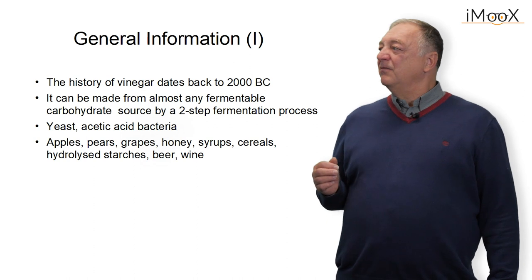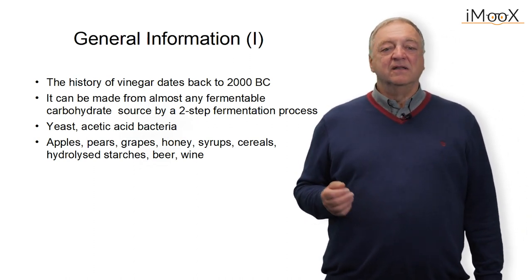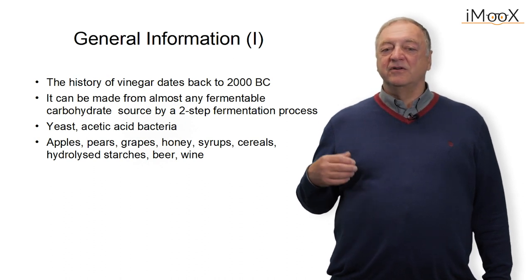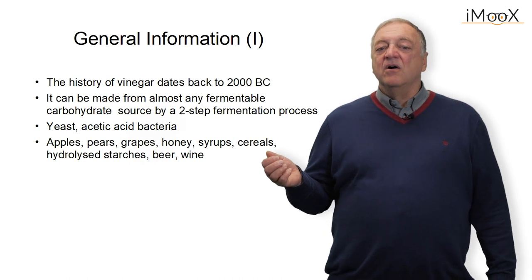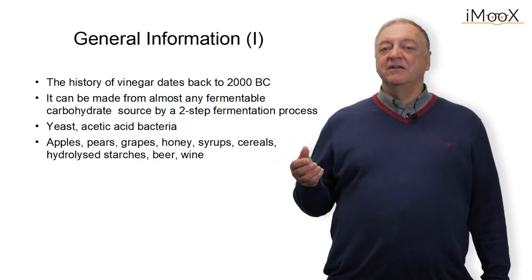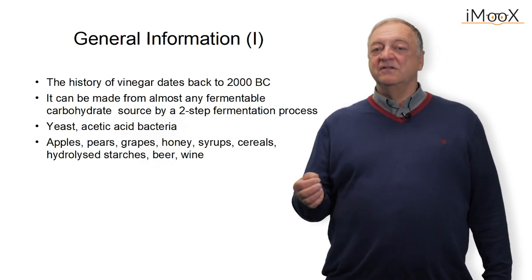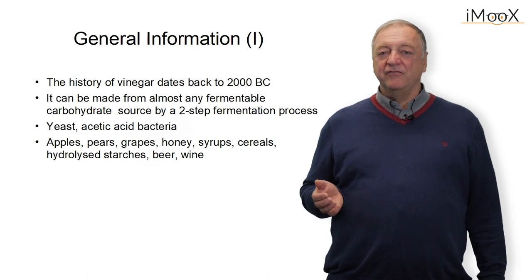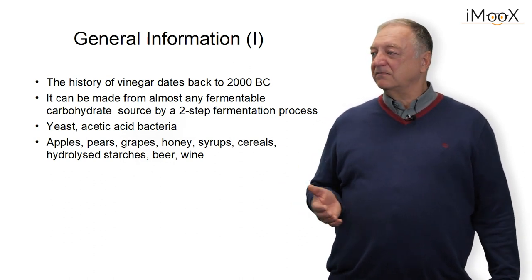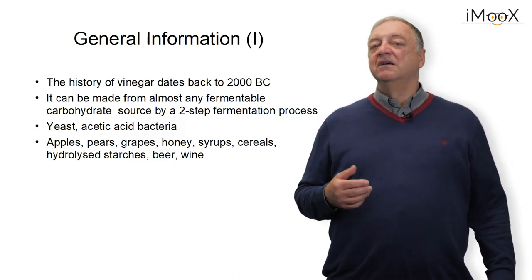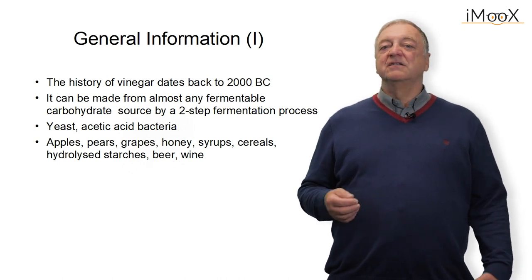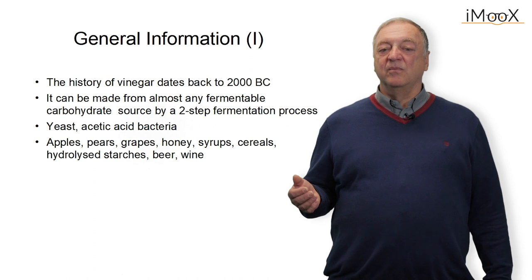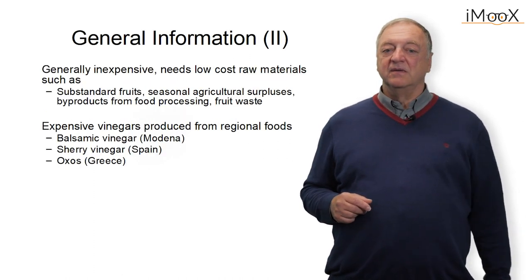For the production of vinegar we can use practically any fermentable carbohydrate, either polymeric or monomeric. This is definitely a two-step process: the first step is the fermentation of the carbohydrates by yeast, and in the second step it is the fermentation with acetic acid bacteria under oxidative conditions where we produce the acetic acid. As a source of carbohydrates we can use practically any fruit or cereals — from apples, beers, grapes, honey, syrups, cereals, hydrolyzed starches, potatoes, or wine.